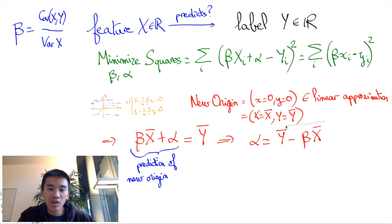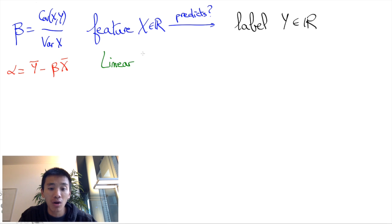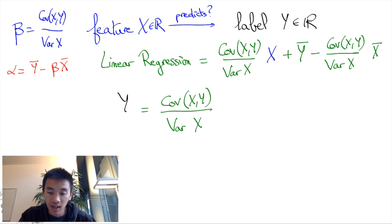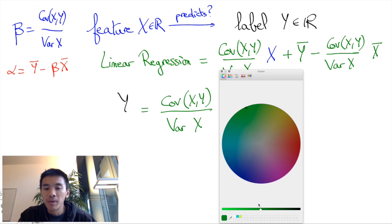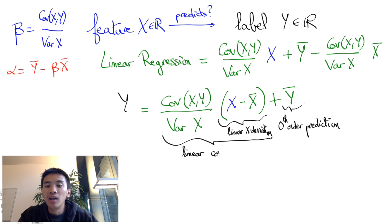And thus eventually we've determined both our beta and our alpha, and we obtain the linear regression Y equals the covariance between the X and the Y divided by the variance of the X, times (X minus the average of X), plus the average of Y. In other words, to first approximation, Y is about the average of Y. Knowing how X deviates from bar X, we can add a linear correction that's determined by how Y varies with X.